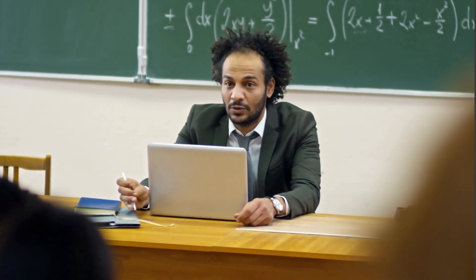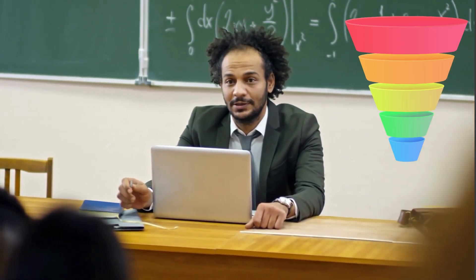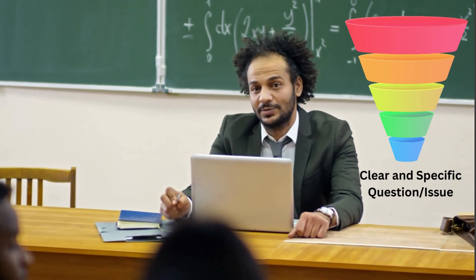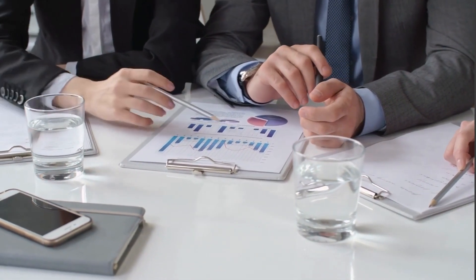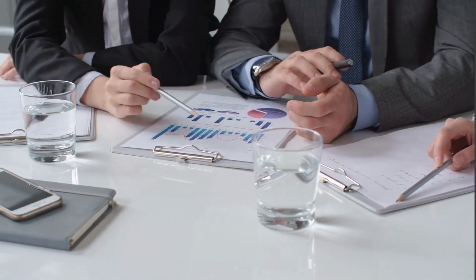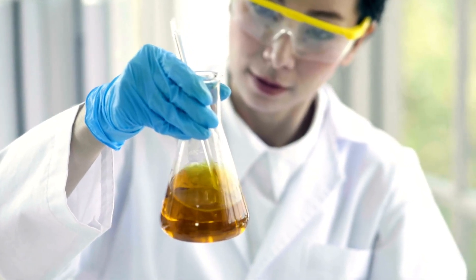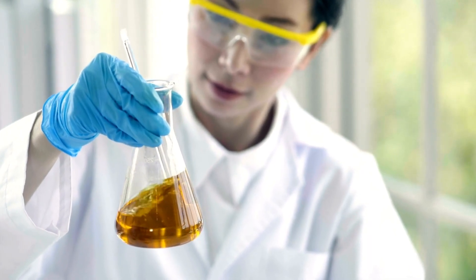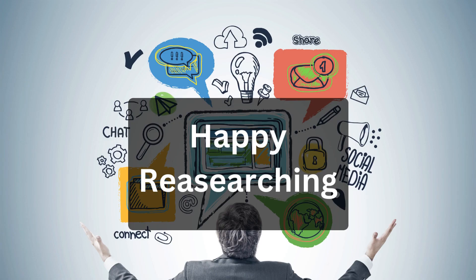In conclusion, the research problem is the broad topic or issue you want to explore, while the problem statement narrows down the focus within that topic, providing a clear and specific question or issue to investigate. Both are essential components of any research study as they help in framing the study, formulating the research questions and conducting meaningful research. I hope this video helped you understand the difference between a research problem and problem statement. Remember, a well-defined problem statement is the first step towards conducting effective research. If you have any questions or need further clarifications, please feel free to contact me on the given email ID under the description box. Until next time, Happy Researching!